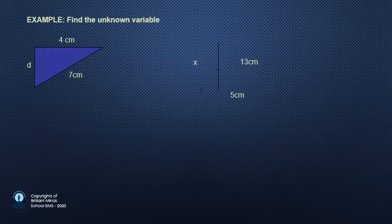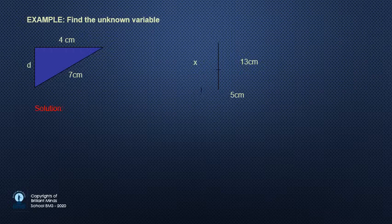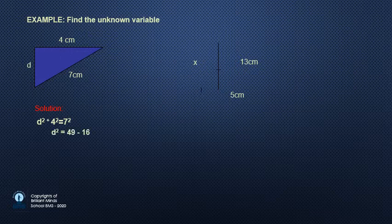Example number one. We see a right angled triangle. Which side is the hypotenuse? Yes, the opposite to the right angle. Then if we want to find the value of d, we'll do what? 7 power 2 equals 4 power 2 plus d power 2. To get the value of d power 2, you will subtract 4 power 2 from 7 power 2. Then d power 2 equals 49 minus 16.